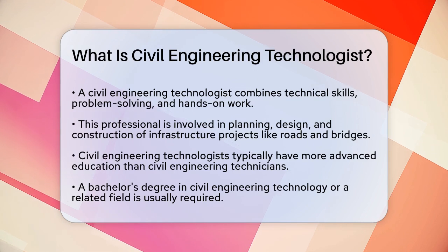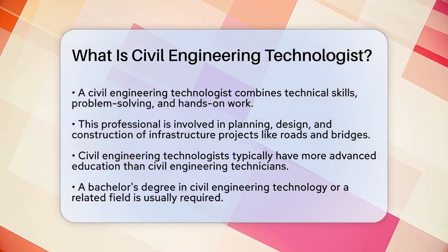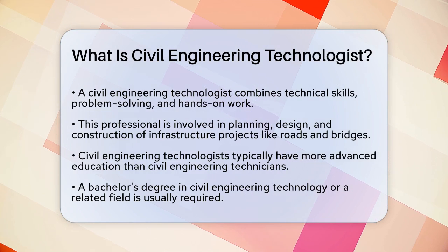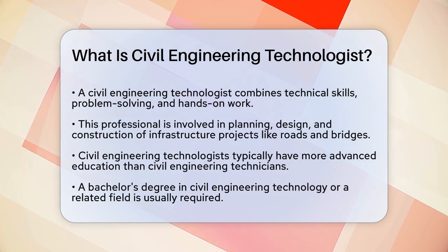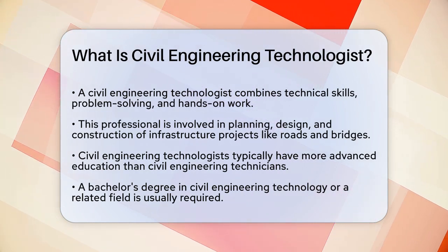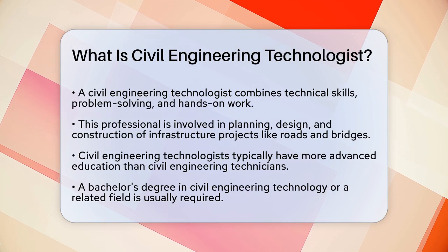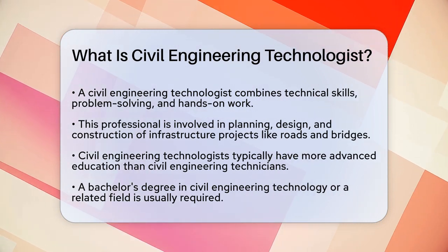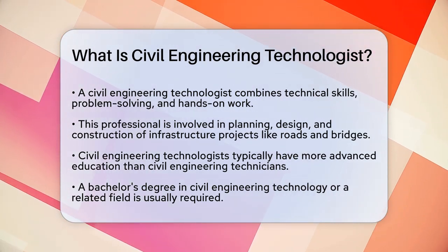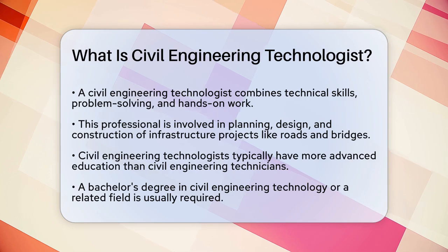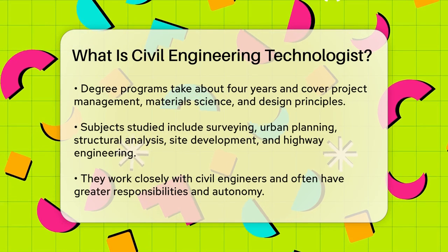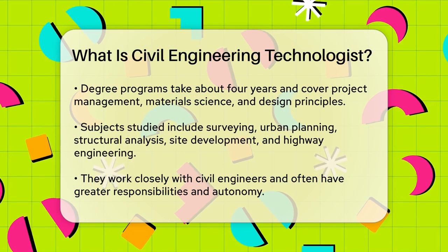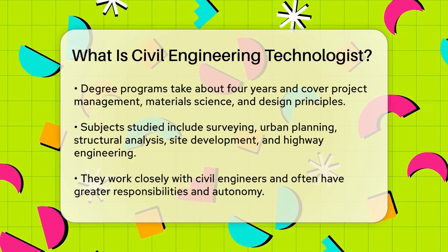Unlike civil engineering technicians, technologists typically have more advanced education and training. To become a civil engineering technologist, you usually need to earn a bachelor's degree in civil engineering technology or a related field. This degree program, which takes about four years to complete, provides advanced training in areas like project management, materials science, and design principles.